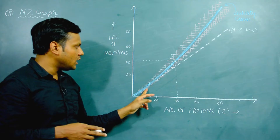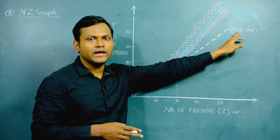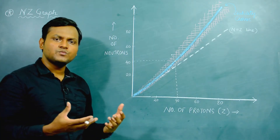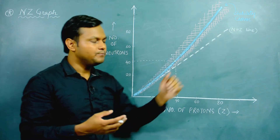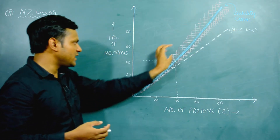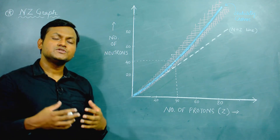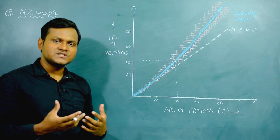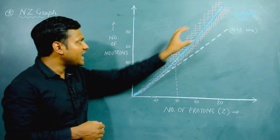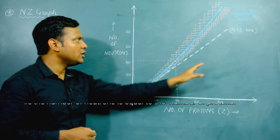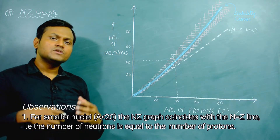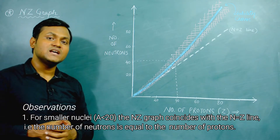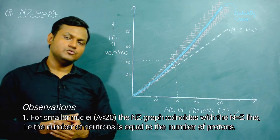Looking at the graph, there is a dotted white line representing the N equals Z line — a theoretical line with slope 1 representing points where the number of neutrons and protons are exactly equal. The first observation is related to smaller nuclei with less mass number. For nuclei with mass number less than around 20, the NZ graph almost coincides with the N equals Z line, meaning the most stable version has equal numbers of neutrons and protons, a 50-50 distribution.